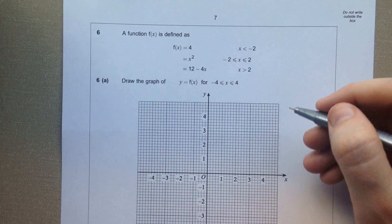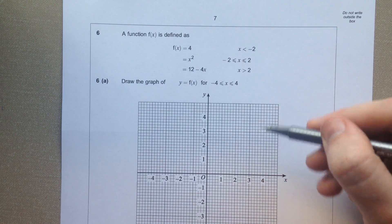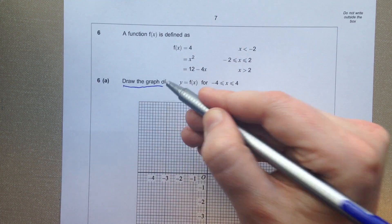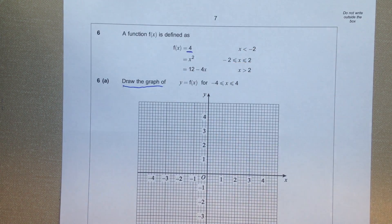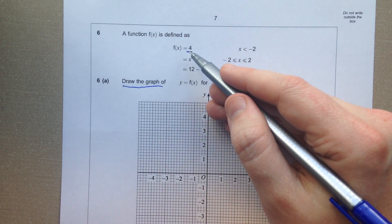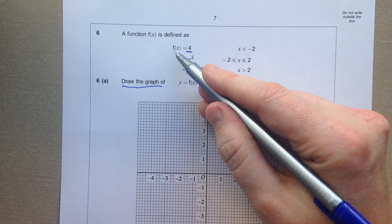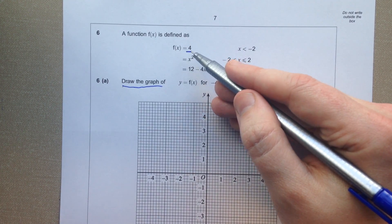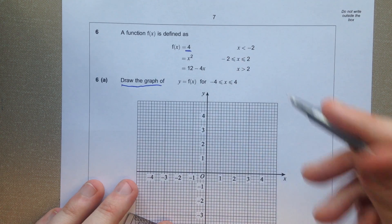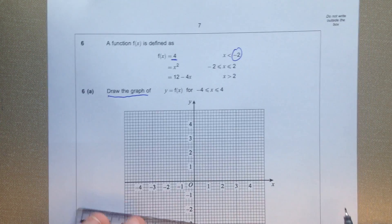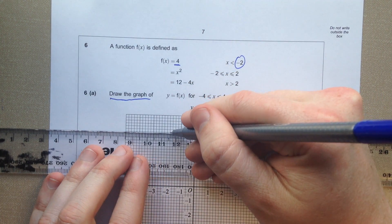It would be beneficial to give us some values for when we're drawing the graph, apart from this one here. So it says f of x equals 4 and y equals f of x, so that means this is the equation of the graph y equals 4 for this bit. So anywhere up to negative 2, we're looking for a horizontal line.